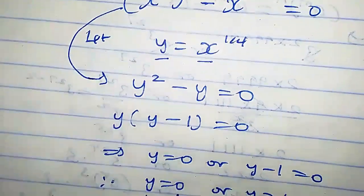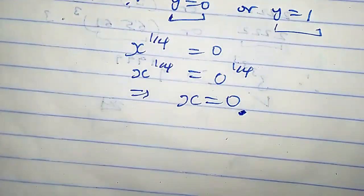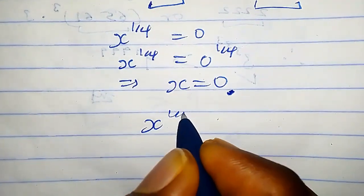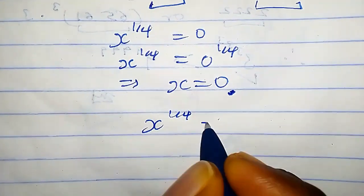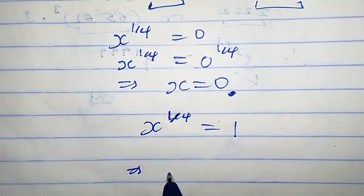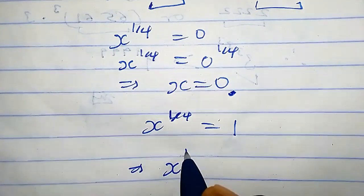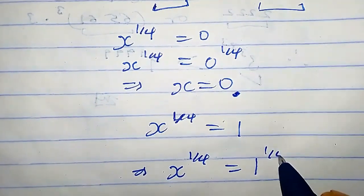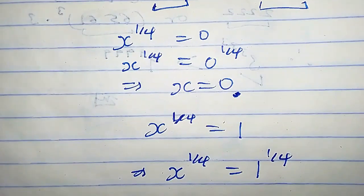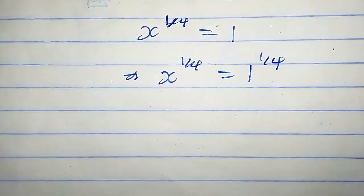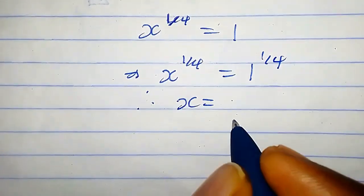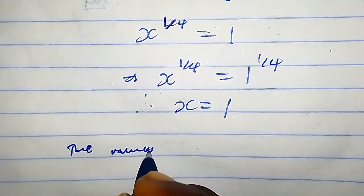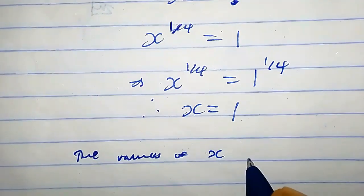When y equals one, we plug it in to get x raised to the power one over four equals one, which can also be written as x raised to the power one over four equals one raised to the power one over four. Nothing has changed, so therefore x equals one.